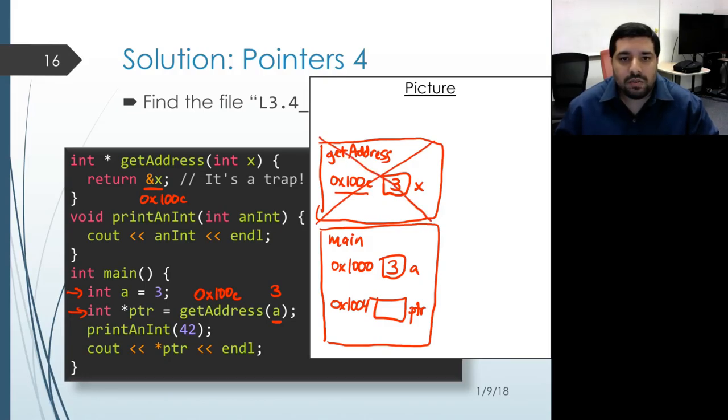And then we continue where we left off in main. And where we left off was initializing PTR. And we now have the value 1000C within PTR.